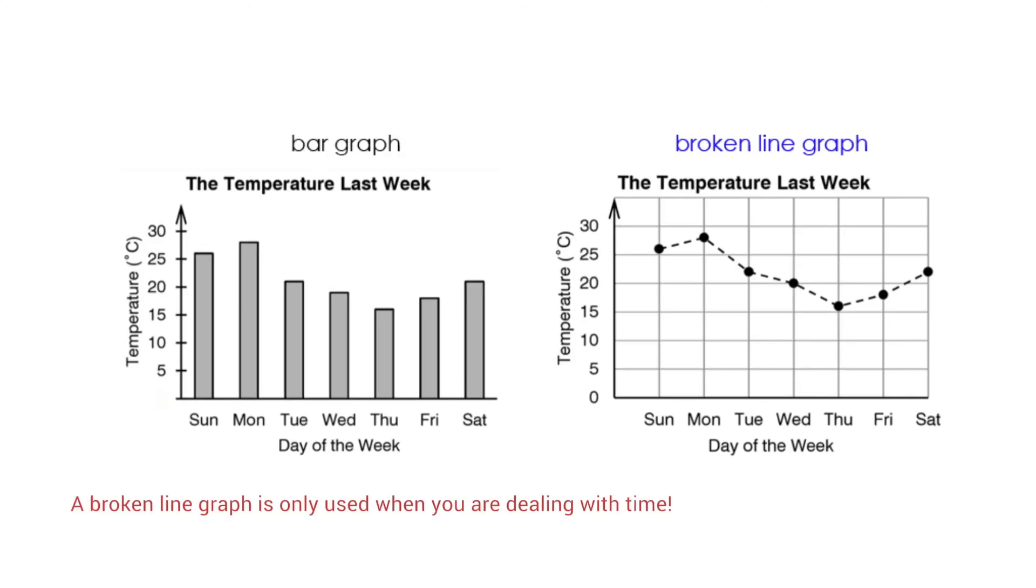Let's look at our second part of the lesson, which is the broken line graph. So these two graphs have the exact same information. They are graphing the temperatures. And this right here, this broken line graph is more appropriate to use when you are doing anything over time. So a broken line graph is only used when you are dealing with time.